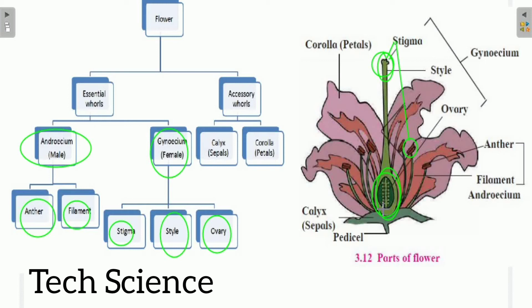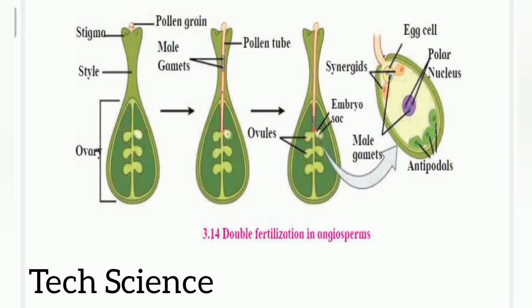The ovary is at the base of the gynoecium and consists of one or many carpels. Actual fertilization takes place in the ovary. This is the complete structure of the flower, and now it is time to see how the process of fertilization occurs.